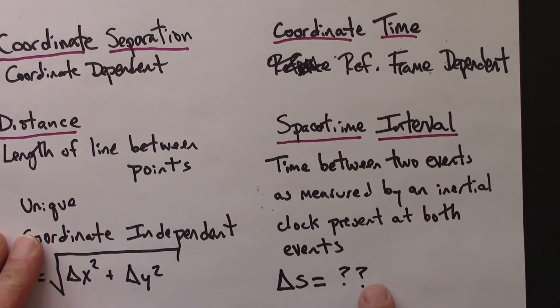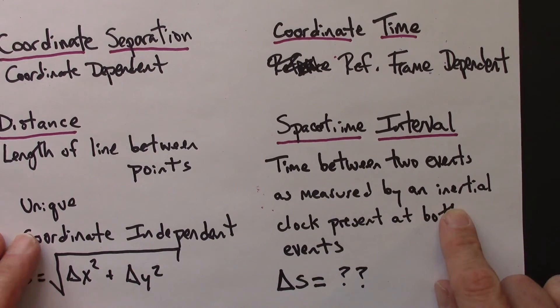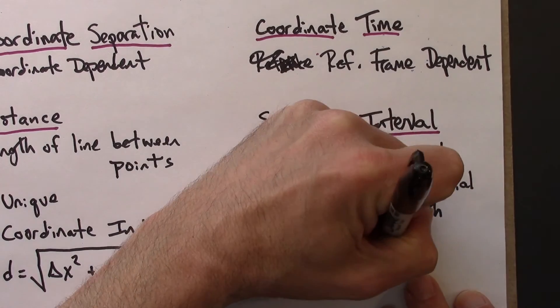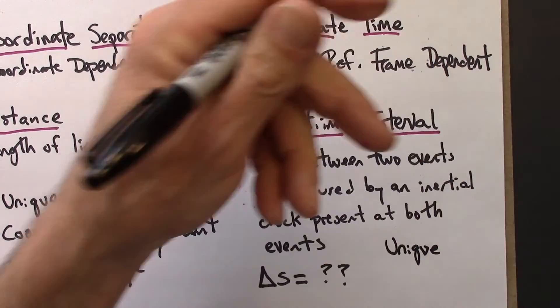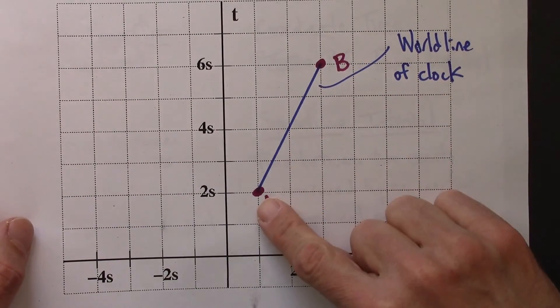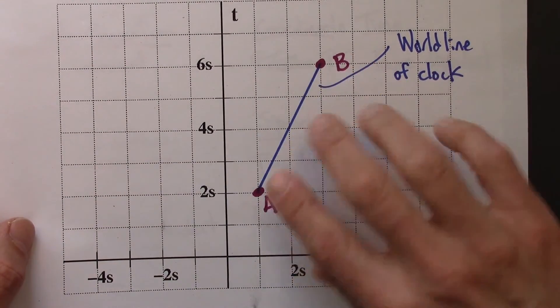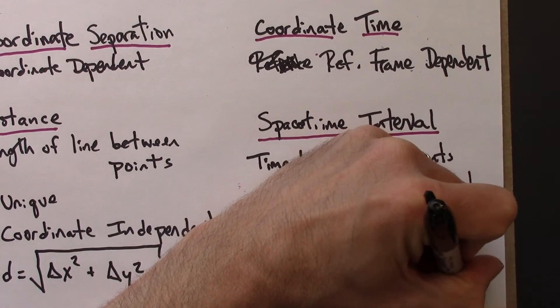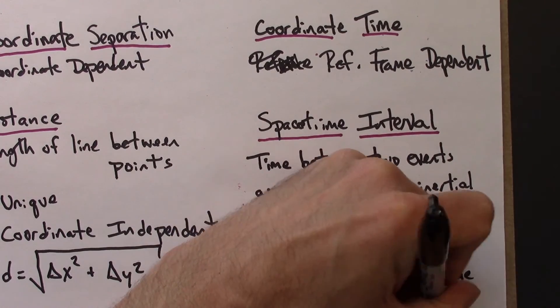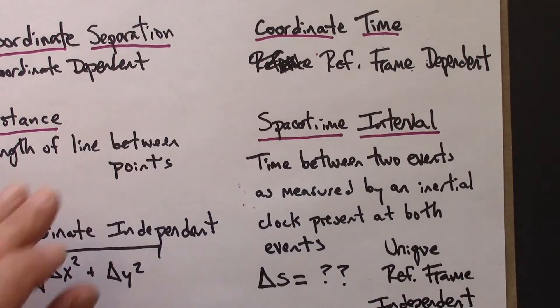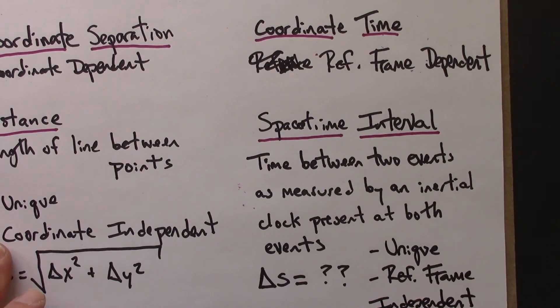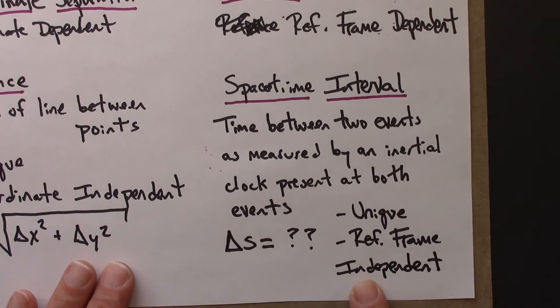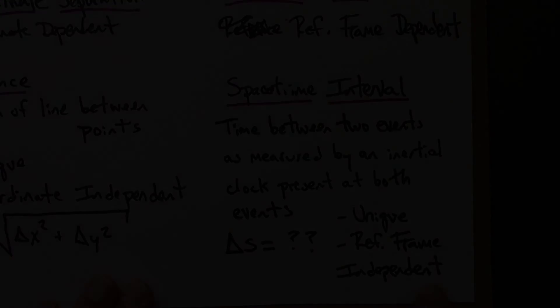The spacetime interval, like the distance, is unique — there's only one way to draw a straight line between two points in spacetime, so there's no ambiguity. It is also coordinate independent, or reference frame independent. I'll back up that claim in unit 4. So we have coordinate time and the spacetime interval as two of our ways of measuring time differences in special relativity.